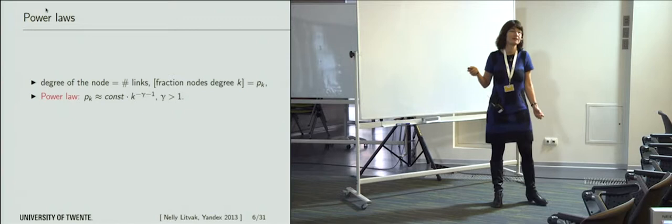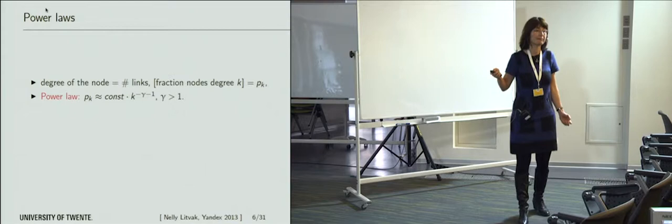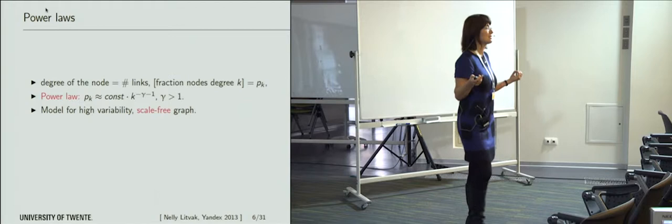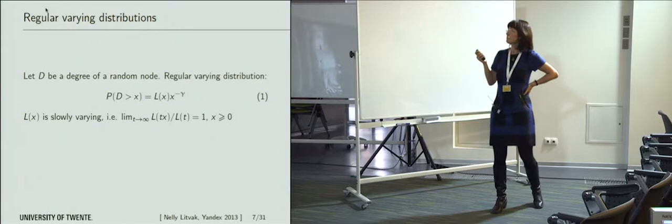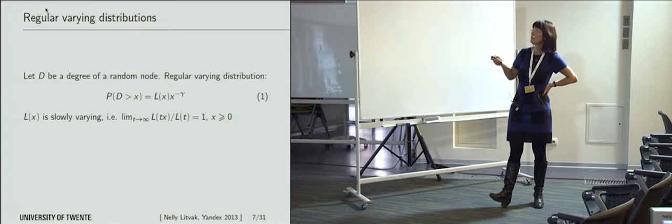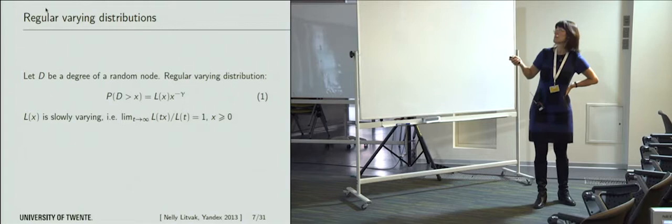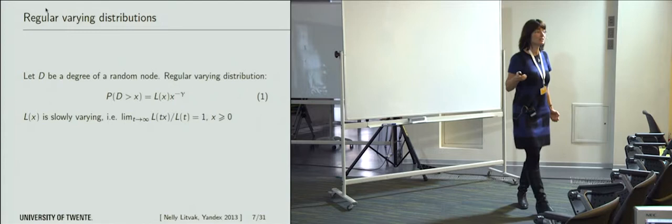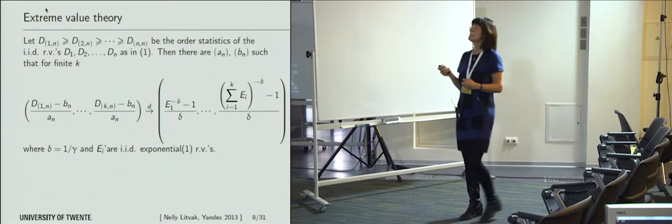Why is this bad? Because we have power laws. Power law is roughly that the proportion of nodes with degree k is roughly some constant multiplied by a power of k. That gives high variability. Power law is nothing else but a model for high variability. We can describe this formally: the distribution of the degree is some slowly varying function — think of a constant or a logarithm — multiplied by a power of x. For this regular variation, a lot of results are known about how sums, powers, or maximum values of regularly varying random variables behave.